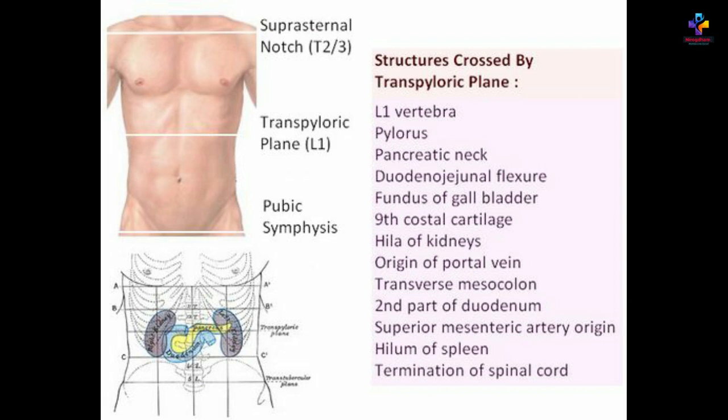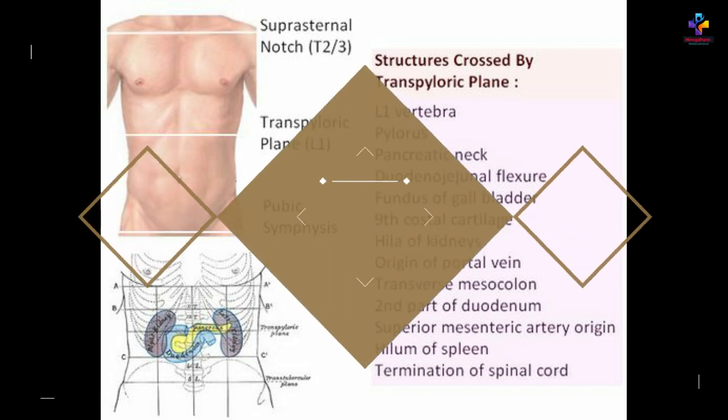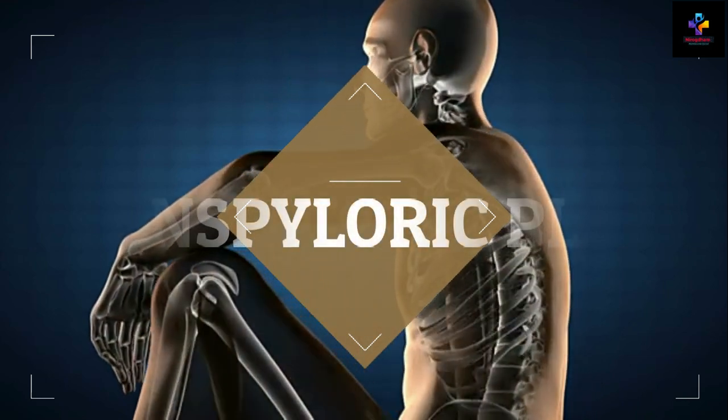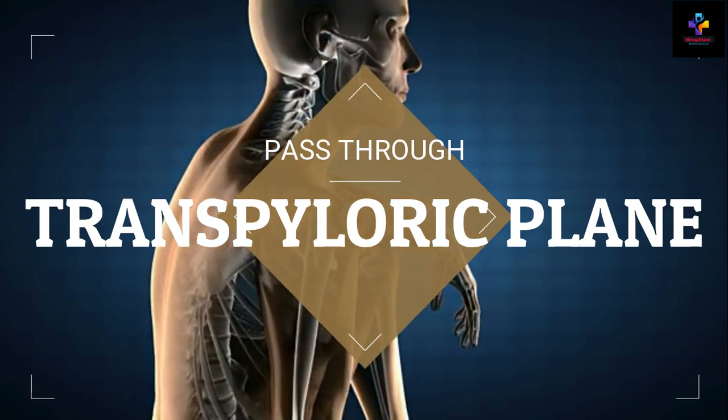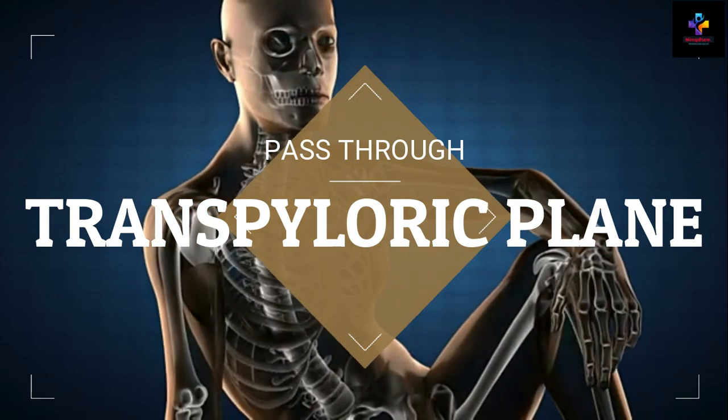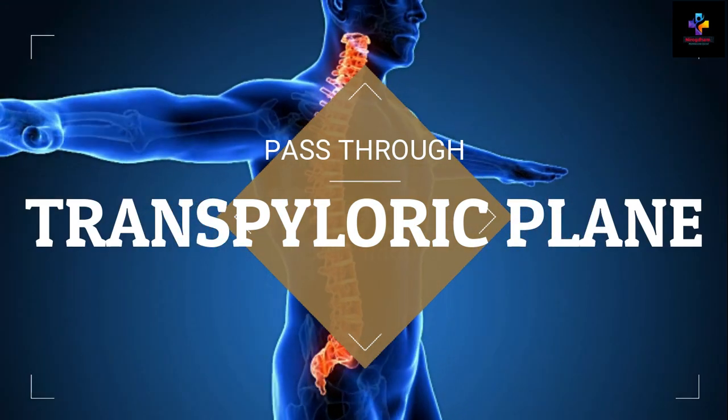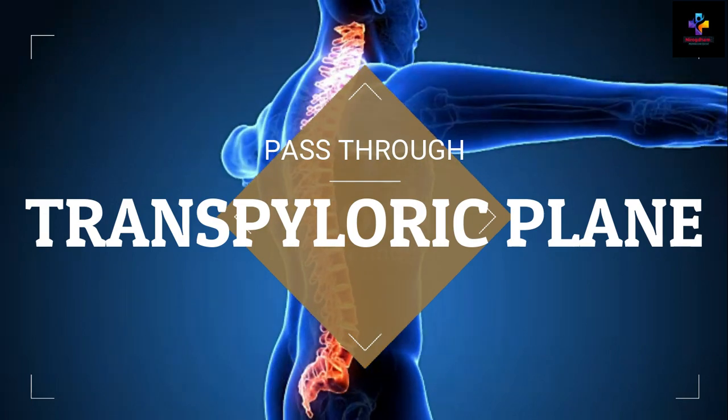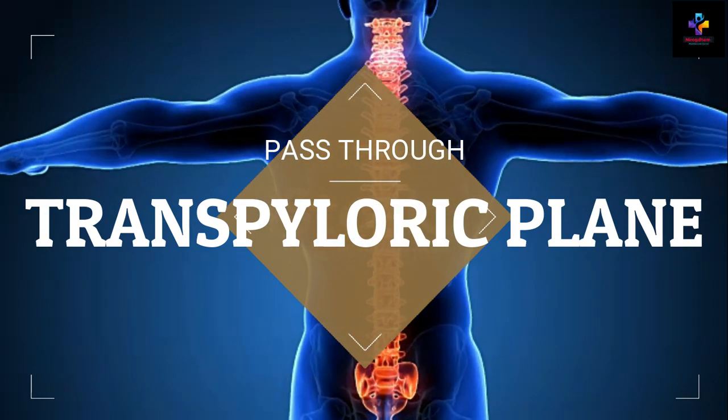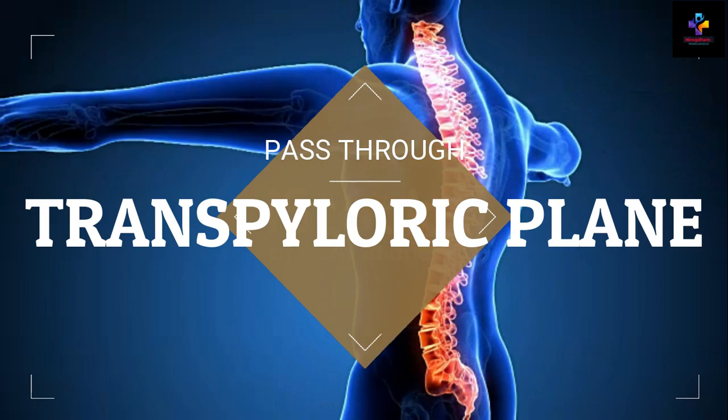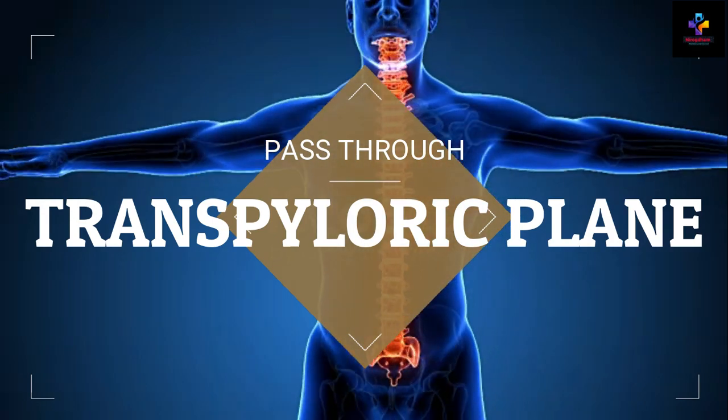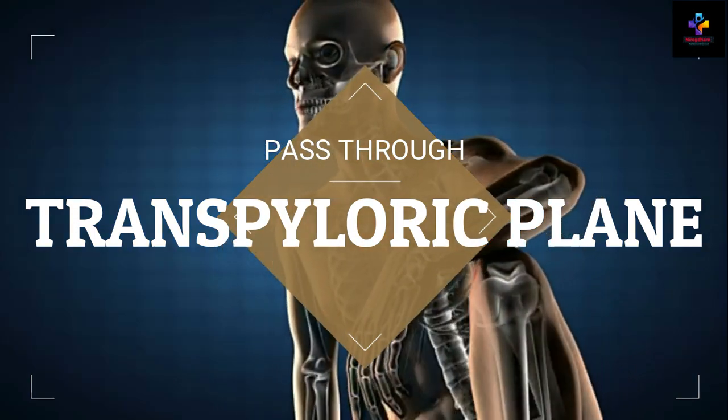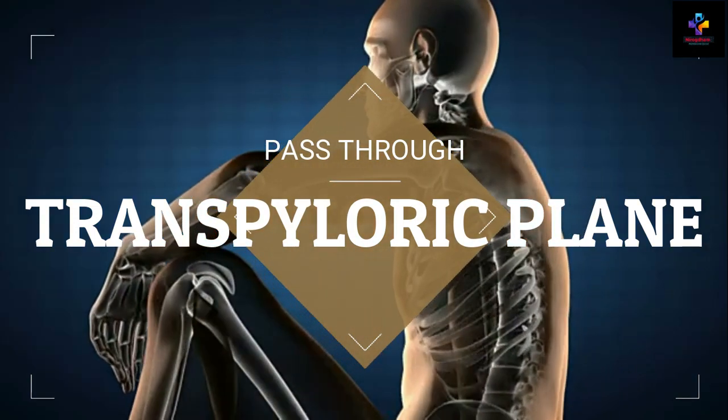The next question was related to the transpyloric plane. The question was: transpyloric plane passes through which area? Second lumbar, tip of 10th rib, pubic symphysis. The transpyloric plane, also known as Addison's plane, is an imaginary horizontal plane located halfway between suprasternal notch of the manubrium and the upper border of pubic symphysis at the level of the first lumbar vertebra.